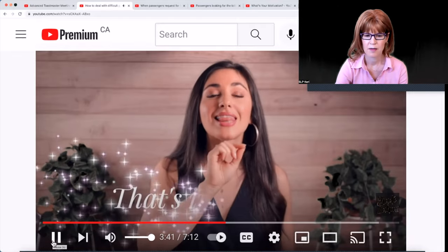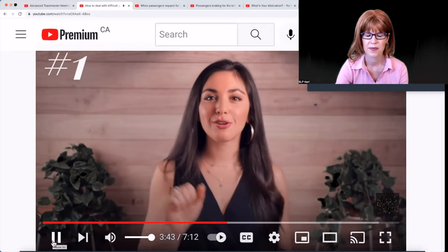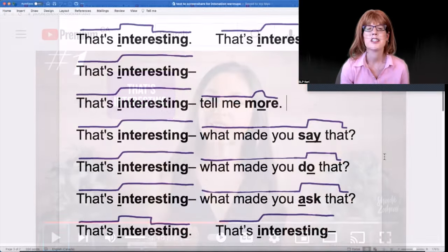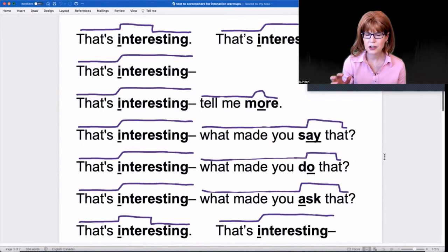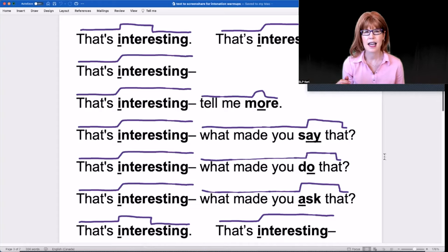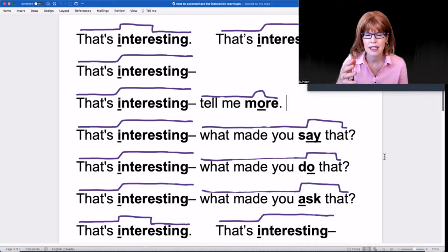Before we practice, we're going to watch speaker Sade. She demonstrates this amazingly. They all start with 'that's interesting.' The first phrase is 'that's interesting.' Sade began by contrasting saying the phrase 'that's interesting' first as a response or comment and then as an incomplete utterance indicating she's got more to say.